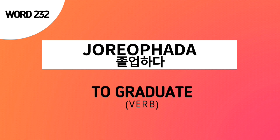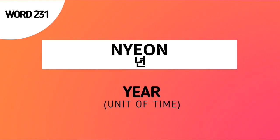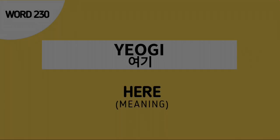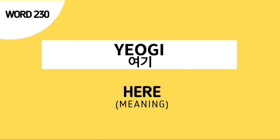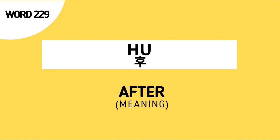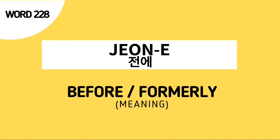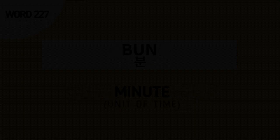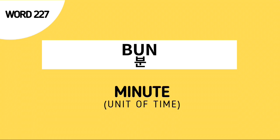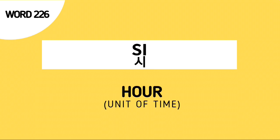Word number 232 is Chorob Hata, a root verb meaning to graduate. Word number 231 is Nyon, which means year. Word number 230 is Hyogi, which means here. Word number 229 is Hu, which means after. Word number 228 is Tone, which means before or formerly. Word number 227 is Poon, which means minute. Word number 226 is She, which means hour.